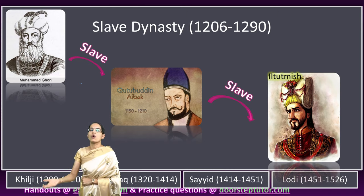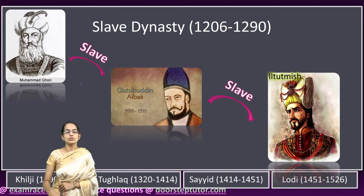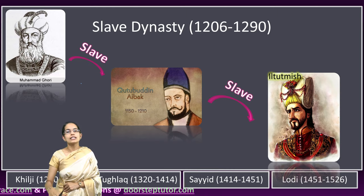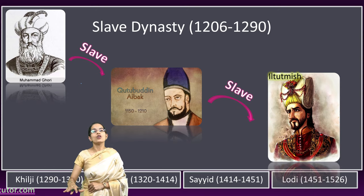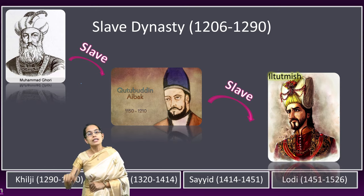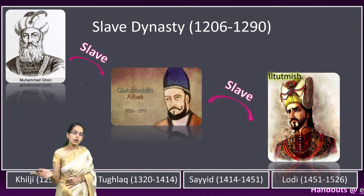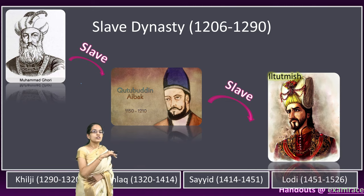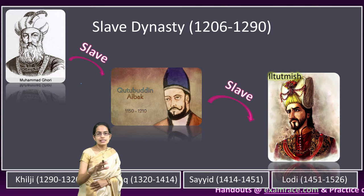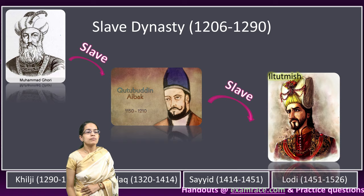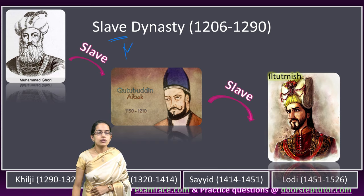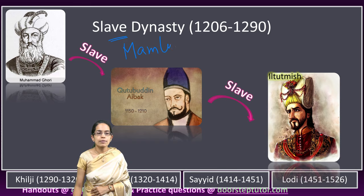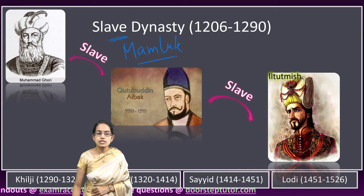Iltutmish was followed by his daughter Razia Sultan. Later, you had Nasiruddin, his youngest son, who rose to power, followed by the father-in-law of Nasiruddin, who was Balban. The word 'Slave dynasty' originates from the Arabic word Mamluk, meaning 'owned.' Qutb-ud-din Aibak, who was the founder of the Slave dynasty, was one of the generals under Mohammed Gauri, but because of his merit, he rose to power and was appointed governor of Indian conquests.